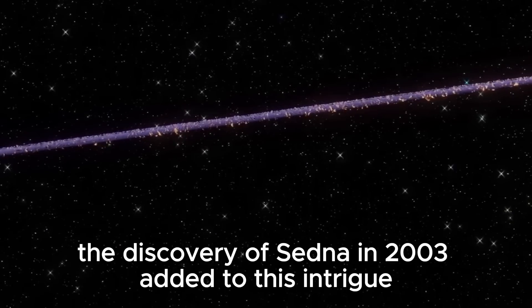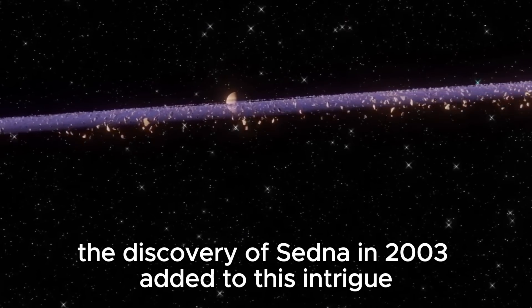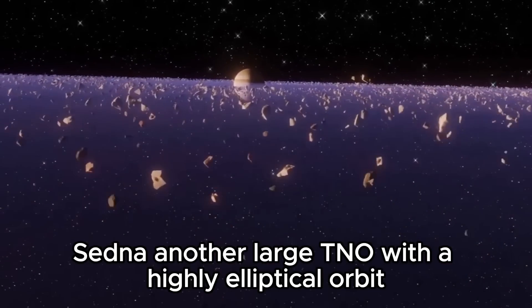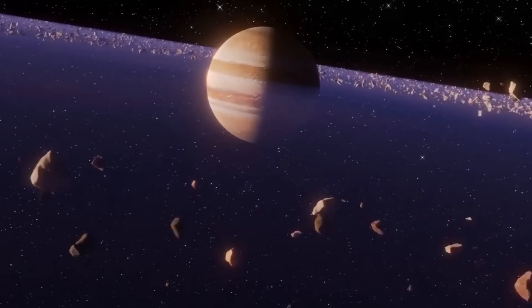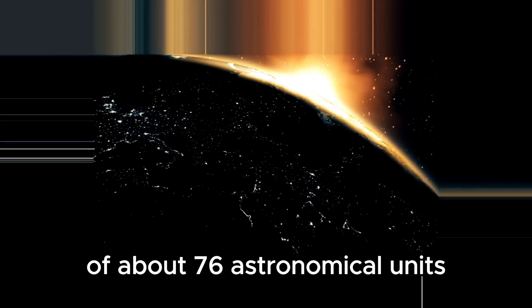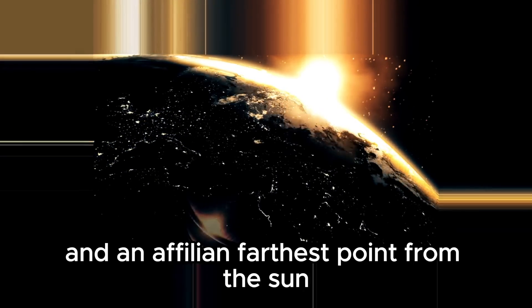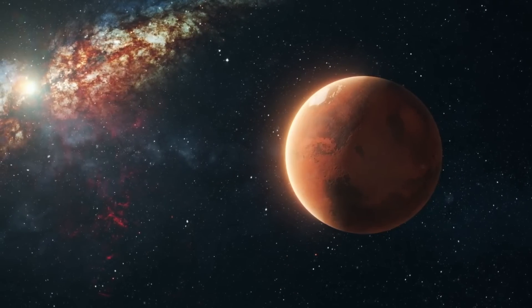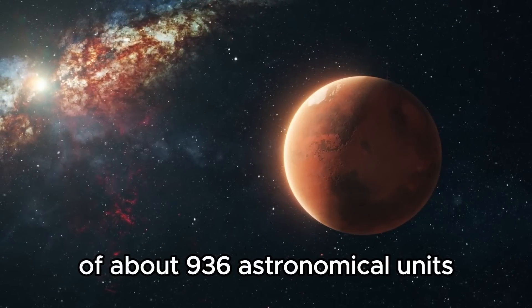The discovery of Sedna in 2003 added to this intrigue. Sedna, another large TNO with a highly elliptical orbit, has a perihelion, closest approach to the Sun, of about 76 AU and an aphelion, farthest point from the Sun, of about 936 AU.